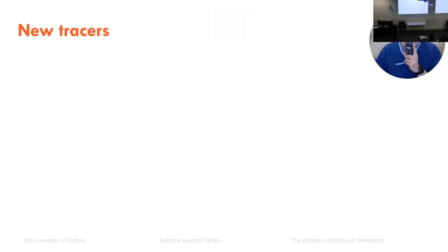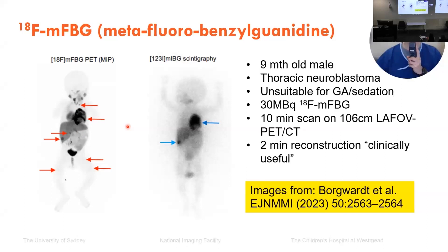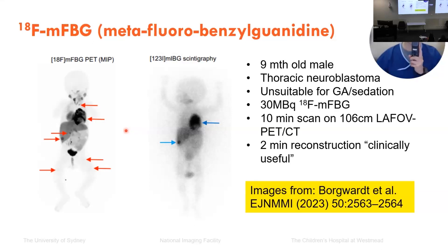I'll briefly highlight two new tracers on the horizon for use in conjunction with the total body PET system in the future. Fluorinated MFBG is a fluorine-labelled equivalent of MIBG, and will become critically important for scanning paediatric patients with neuroblastoma. This is a case report from Copenhagen of a nine-month-old boy with a massive thoracic neuroblastoma — the tumour was so large that the patient was unable to undergo general anaesthetic or sedation. Therefore, an MFBG PET-CT scan was performed on an extended field-of-view PET-CT system with a 10-minute acquisition requiring no sedation. The authors comment that a two-minute reconstruction of the list-mode data provided clinically useful information, so there is scope to perform scans even faster.